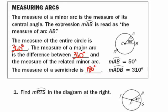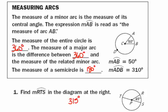The measure of a major arc — greater than 180 degrees — is 360 minus the measure of the related minor arc. A semicircle is 180 degrees. Arc ADB is a major arc (three letters indicate it goes through point D), so its measure is 360 minus 50 = 310 degrees. Please find the measure of arc RTS in the diagram. Hit pause now — the answer is 315 degrees.